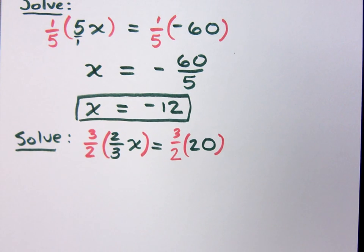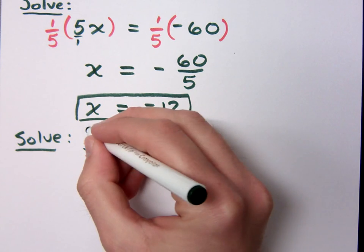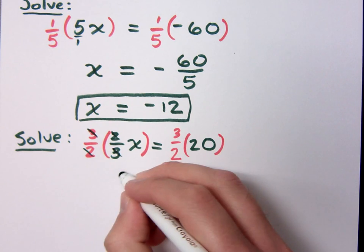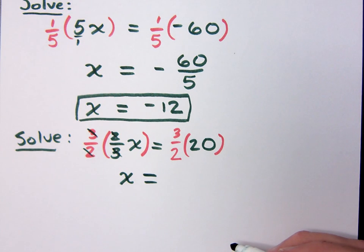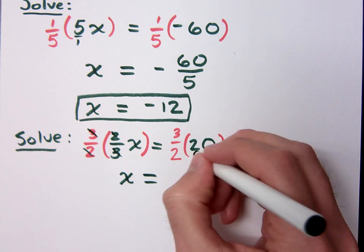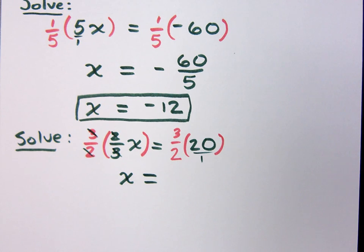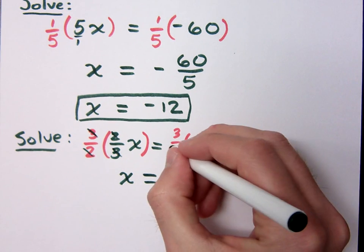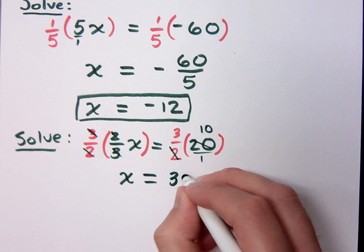So on the left side of this equation, the 2 is reduced to give you a 1, the 3 is reduced to give you a 1, and you have x by itself. What's going to happen on the right side? You could do 3 times 20 and then divide it by 2, but before we do that, let's remember that 20 is 20 over 1, and let's reduce and make numbers smaller before we make them larger. Make your life easier. So 2 can reduce into the 20 ten times, and you get 30.